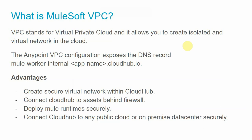We are going to see various concepts of VPC: how VPC works in MuleSoft, what is the architecture of VPC, what is a dedicated load balancer, and what are the different firewall rules we can set up on the VPC. Apart from that, the Anypoint VPC configuration exposes a DNS record: Mule-Worker-Internal-AppName.CloudHub.io. You can use this to find the internal IP address of your application deployed to cloud app.